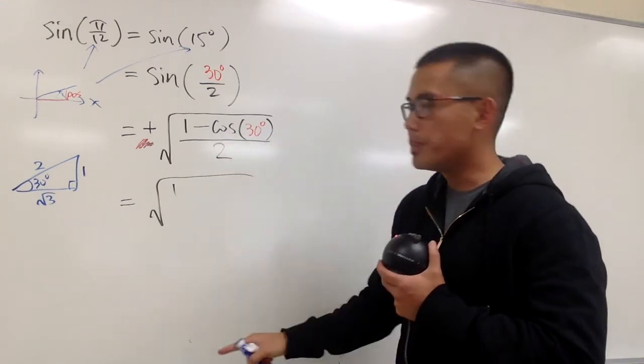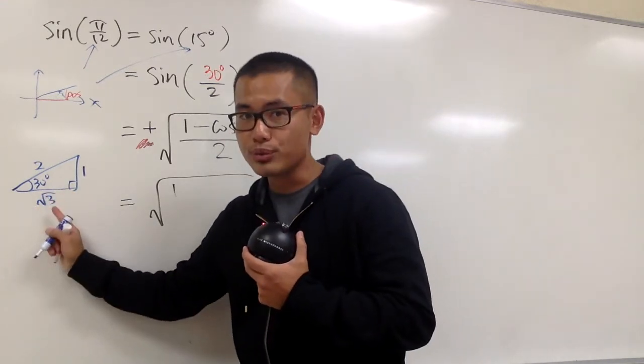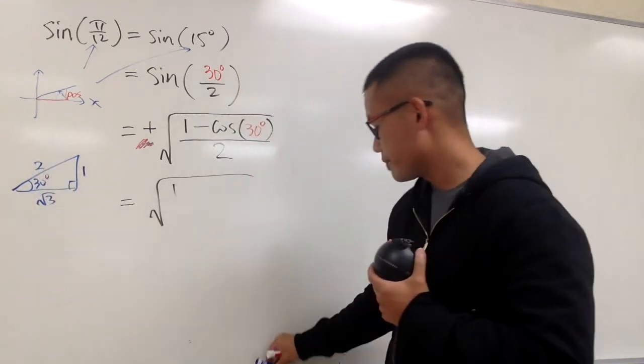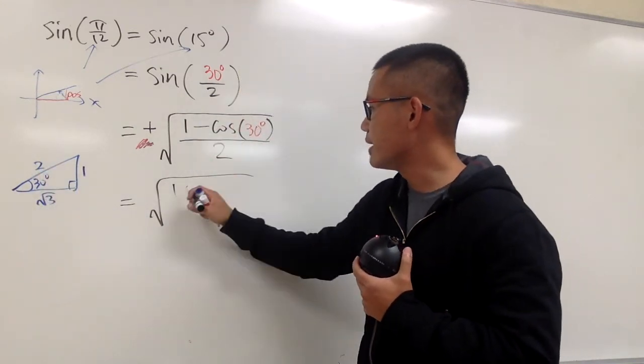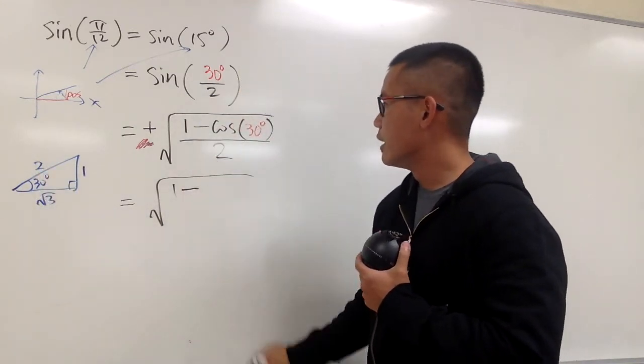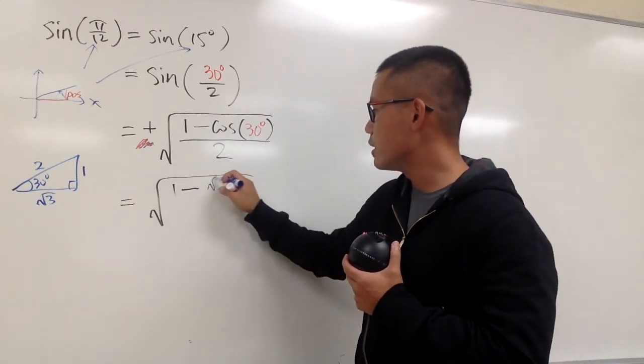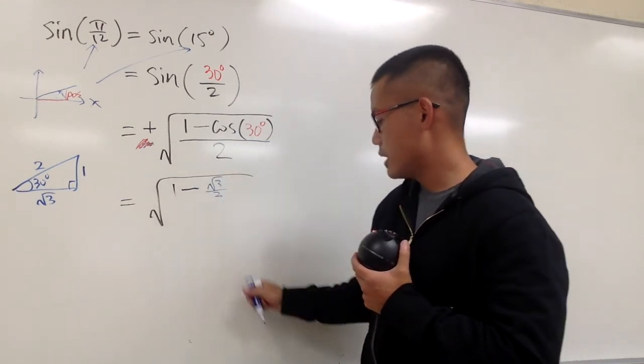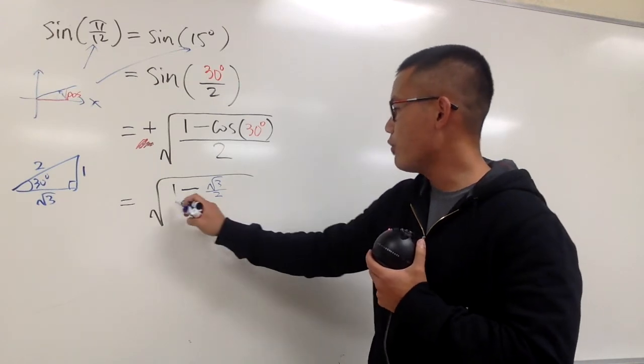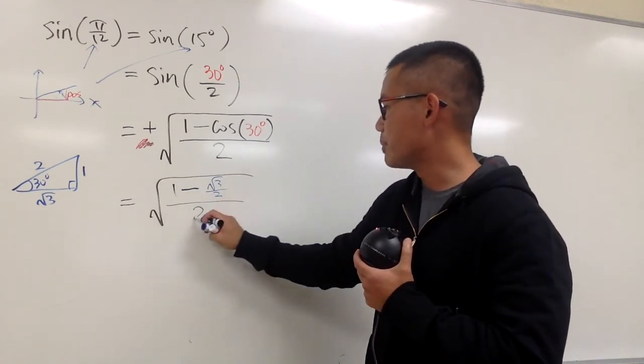So, cosine of 30 degrees will be adjacent, which is square root of 3, and then over 2. Be sure we still have the minus in between. Cosine of 30 degrees is square root of 3 over 2, and then this is all over this 2 in the denominator like that.